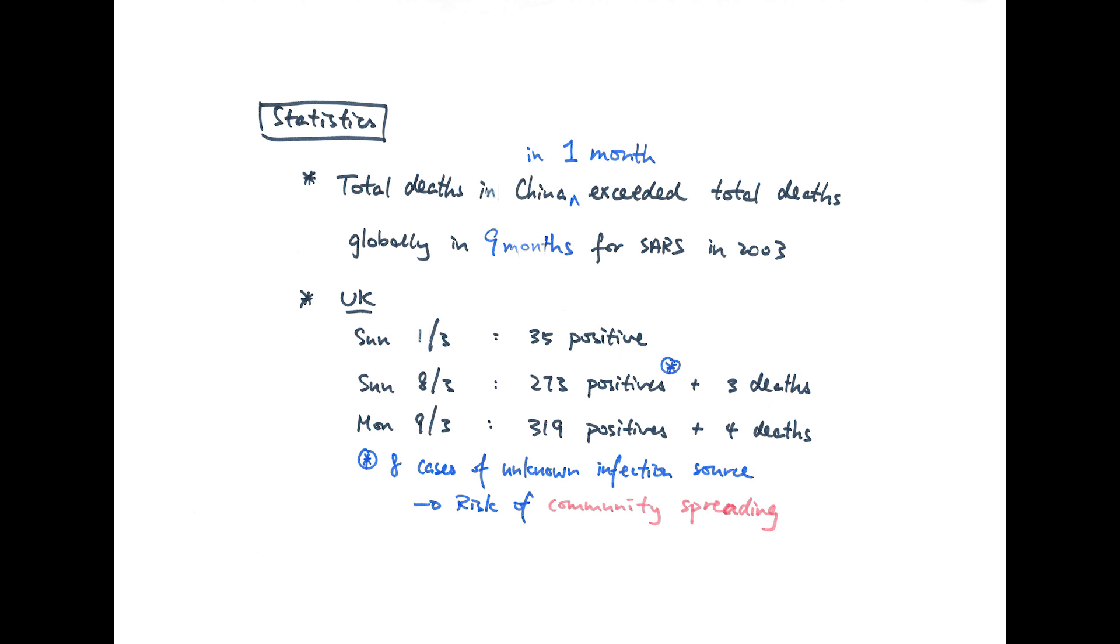8 of the cases have unknown infection sources, which means that the government can trace where these people have contracted the virus from.